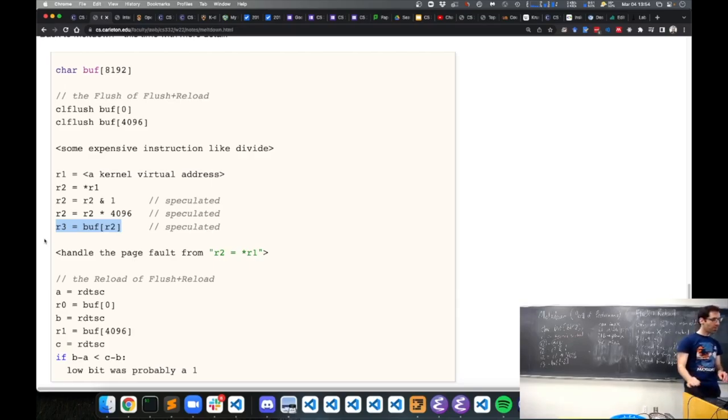Eventually, when we retire this instruction, it's going to cause a page fault. And as a user process, we may have kind of registered our own page fault handler to deal with this. There are a couple other approaches that are described in the reading. But we kind of recover or suppress this page fault.